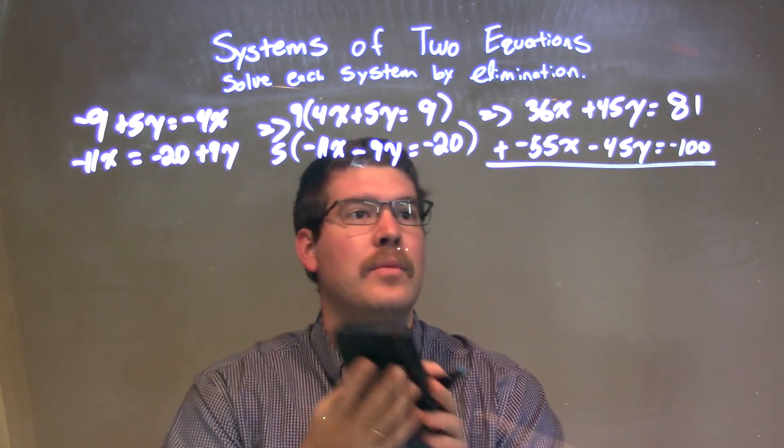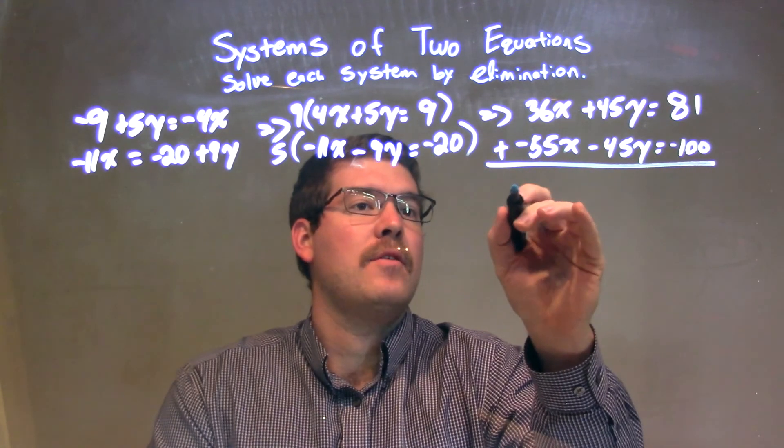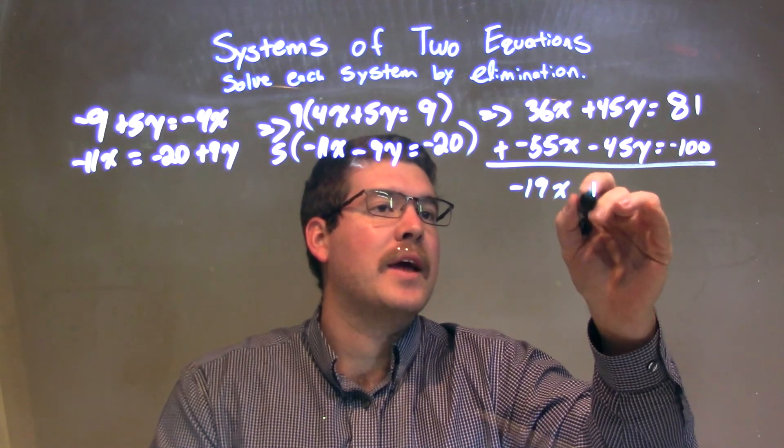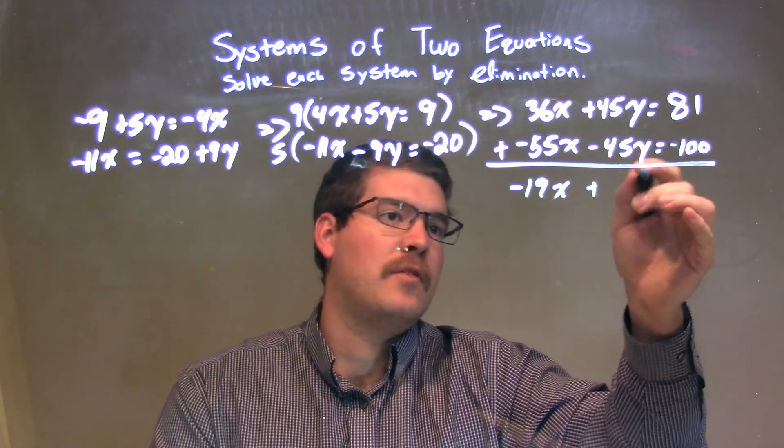comes out to be negative 19x. The y's will cancel, 45y and negative 45y will be 0.